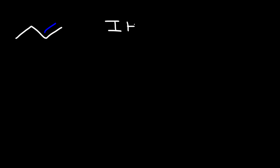What is the degree of unsaturation for 1-butene? The degree of unsaturation is also known as the IHD, index of hydrogen deficiency. If you have one double bond, the IHD will be one.